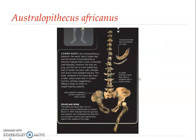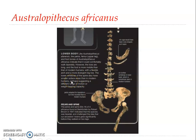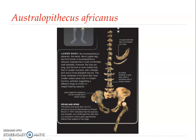Regarding the lower body, the pelvis, femur, and foot bones indicate that Australopithecus africanus could comfortably walk bipedally. However, the toes are long and the foot is more mobile than that of modern humans, with a flexible arch and more divergent big toe. The lower vertebrae of the spine also have smaller surface areas than in modern humans, perhaps suggesting a different range of motion or weight-bearing capacity. The pelvis is adapted for bipedalism but not exactly like that of humans. There were six lumbar vertebrae in the lower back, and the rib cage would have been cone-shaped — a character of apes.